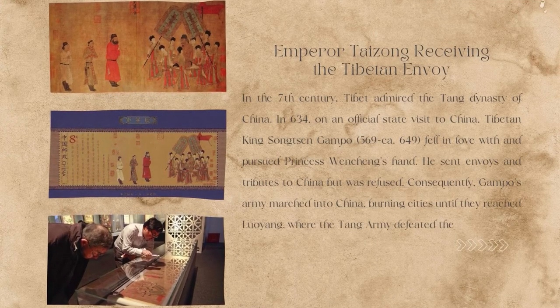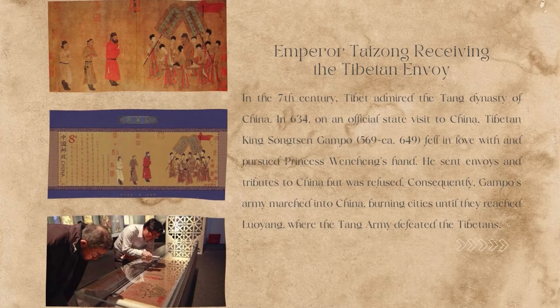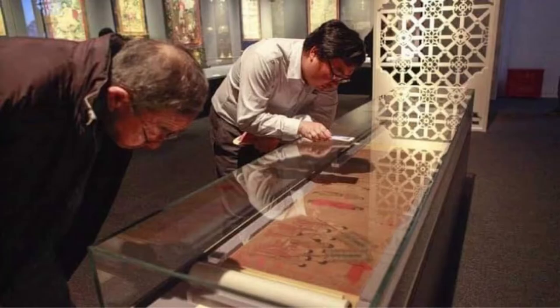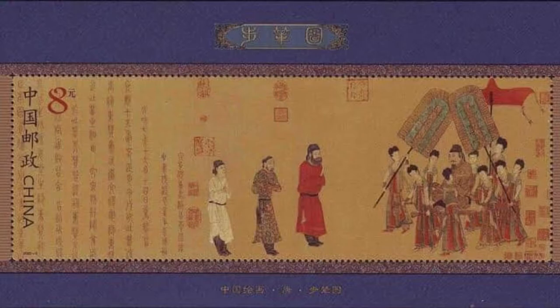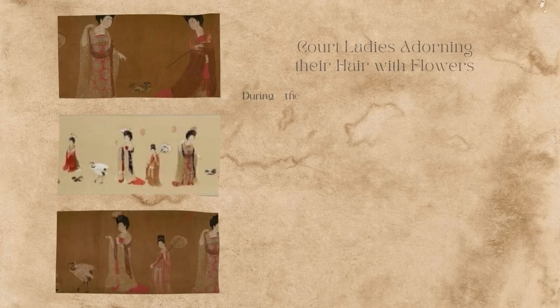The second is Emperor Taizong Receiving the Tibetan Envoys. In the seventh century, Tibet admired the Tang dynasty of China. During a non-official state visit, Tibetan king Songtsen Gampo fell in love and pursued Princess Wencheng's hand. He sent envoys and tributes to China but was refused. Consequently, Gampo's army marched into China, burning cities until they reached Luoyang, where the Tang army defeated the Tibetans.